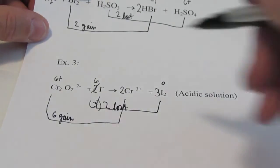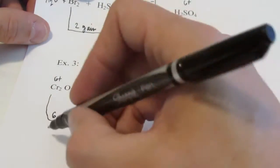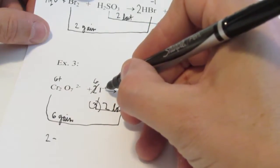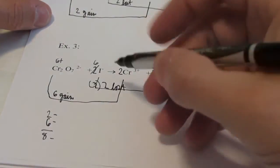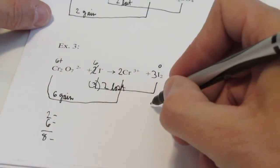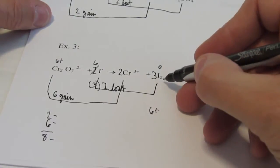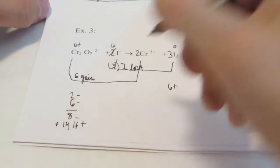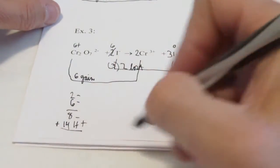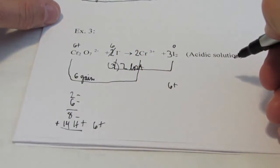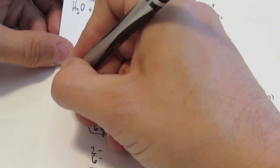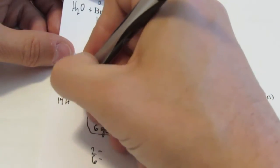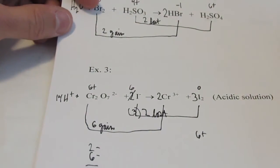Next we'll balance the ionic charge. Dichromate is a 2⁻ ion and I have six iodine ions for a total of eight negatives on the reactant side. On my product side I have two Cr³⁺ for a total of six plus, and iodine molecules are not charged. So I need to add a total of 14 H⁺ to the reactant side — that will give me six positives so the ionic charge will balance.